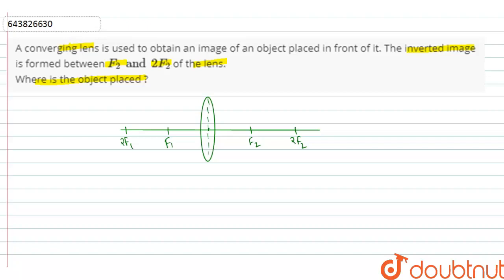So, according to question, the image is formed between the region f2 and 2f1. The image is formed between this region.